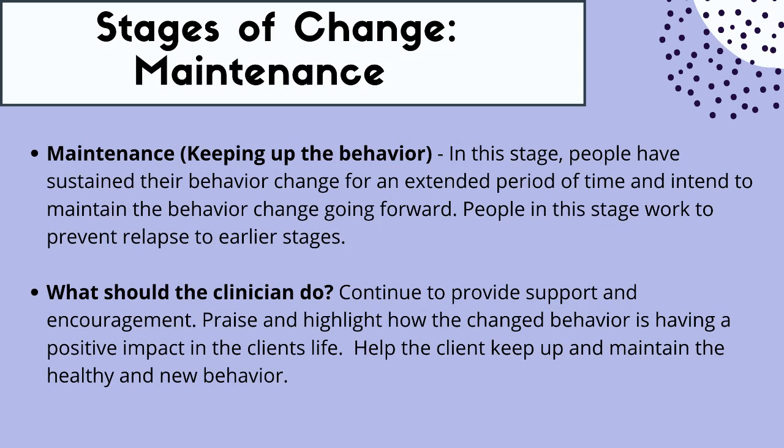With action, you keep up with the behavior and move into the maintenance phase. In this stage, people have sustained their behavior change for an extended period of time — usually more than six months, but it really depends on what change they're making — and they intend to keep this behavior change going forward. For example, you've been cutting back on screen time, doing meditations, sleeping better than ever, and now this is a lifestyle. People in this stage are working to prevent relapse to earlier stages because they've seen the positive effects and want to continue committing to having this be part of their lives.